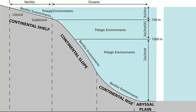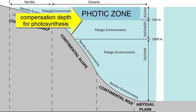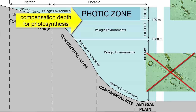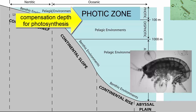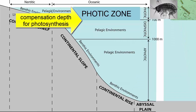Photosynthesizing organisms can live only in areas of the ocean with at least one percent of surface light availability. We call this depth the base of the photic zone and the compensation depth for photosynthesis. Though there is still some minimal light below this depth and photosynthesis can technically still occur, it is not enough light to make enough sugar to meet the organism's own daily energy needs — thus no photosynthesizing autotrophs can exist below this depth.